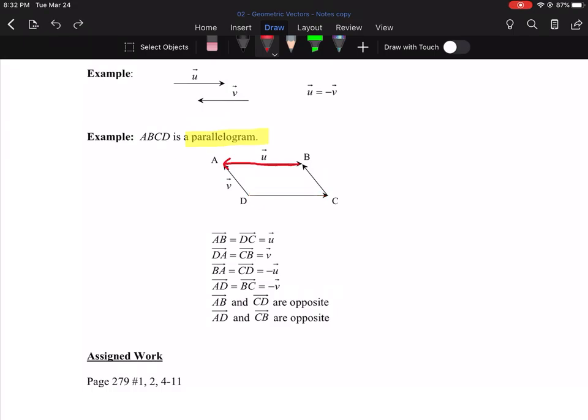Similarly, AD, which AD would be this vector here, going from A to D, and that vector is equal to BC, which is going from B to C. Those have the same length and same direction, but they wouldn't be called V because V, as shown in the original picture, was from D to A, so these AD and BC that we're talking about would be equal to negative V.